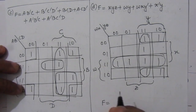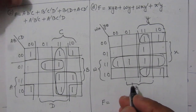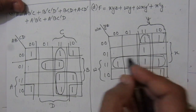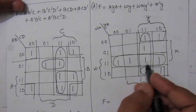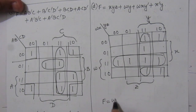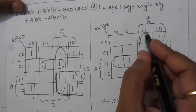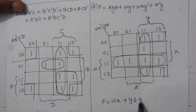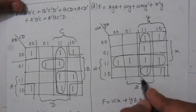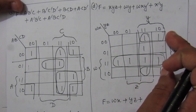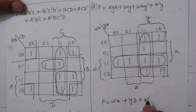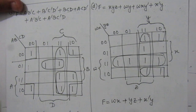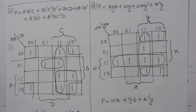From this four variable map we can find the simplified expression. The first term gives WX, plus the next term gives YZ, and the third term gives X-bar Y. So the simplified expression for the fourth problem is WX + YZ + X-bar Y. Thank you for watching. If you have any question, please put it in the comment section below. Also like, share, and subscribe to my channel.